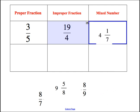4 and 1 sevenths is a mixed number. It has a whole number of 4 and a fraction of 1 seventh.